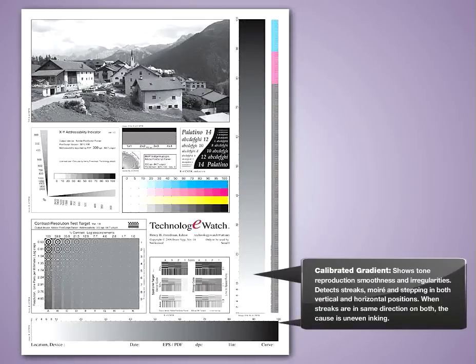Calibrated gradient. Shows tone reproduction smoothness and irregularities. Detects streaks, moiré, and stepping in both vertical and horizontal positions. When streaks are in the same direction on both, the cause is uneven inking.